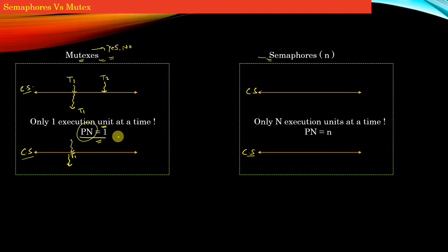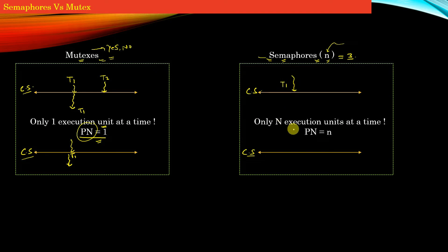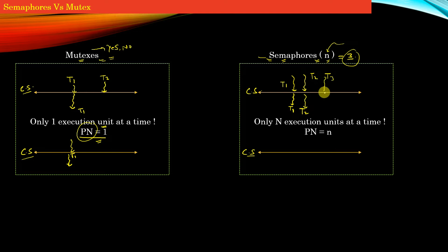The story of semaphore is slightly different. Whenever we create a semaphore, we have to specify a non-negative or positive integer — this positive integer is the permit number of that semaphore. In this example, let us say we have a critical section protected by a semaphore with permit number N equal to 3. When thread T1 arrives and tries to enter the critical section, the semaphore allows entry. Similarly, when thread T2 arrives, the semaphore allows T2 to execute inside the critical section as well.